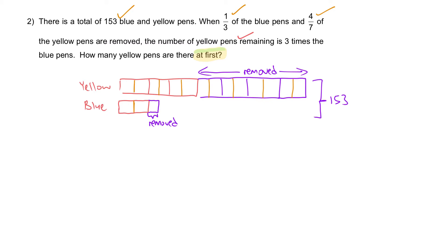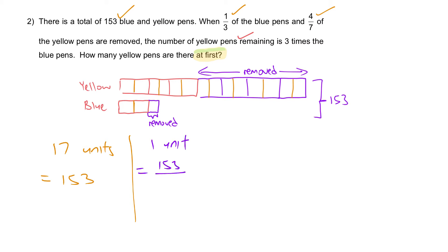Step one: 17 units is equal to 153. One unit will be 153 divided by 17, which gives you 9. How many yellow pens are there? In total we have 14 yellow units.